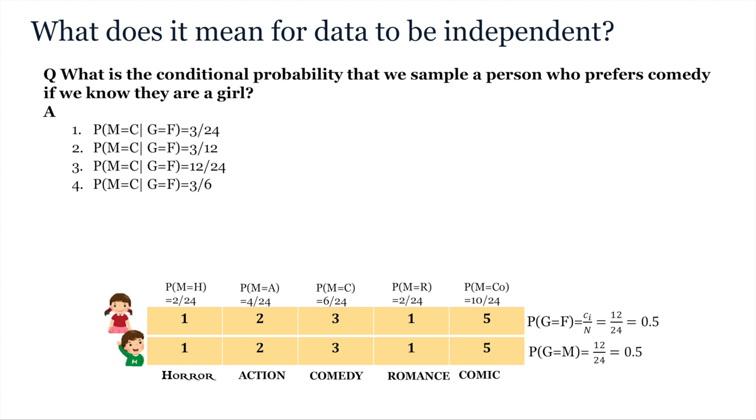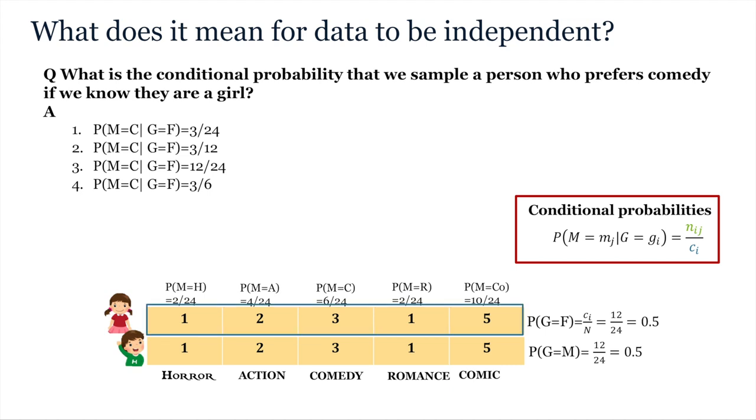Finally, let's consider what happens when we're interested in the conditional probability of some outcome given that we already know something about the sample. For example, what if we want the probability that we sample a person who prefers comedy if we already know that they're a girl? In this case we only have 12 degrees of freedom, 12 possible samples because we already know that it's a girl and that we have 12 of those. So what we are left with is the consideration of what percentage of those chose comedy? So what's the conditional probability that we select someone who prefers comedy given that we know it's a girl? Again pause the video and try this on Keats.